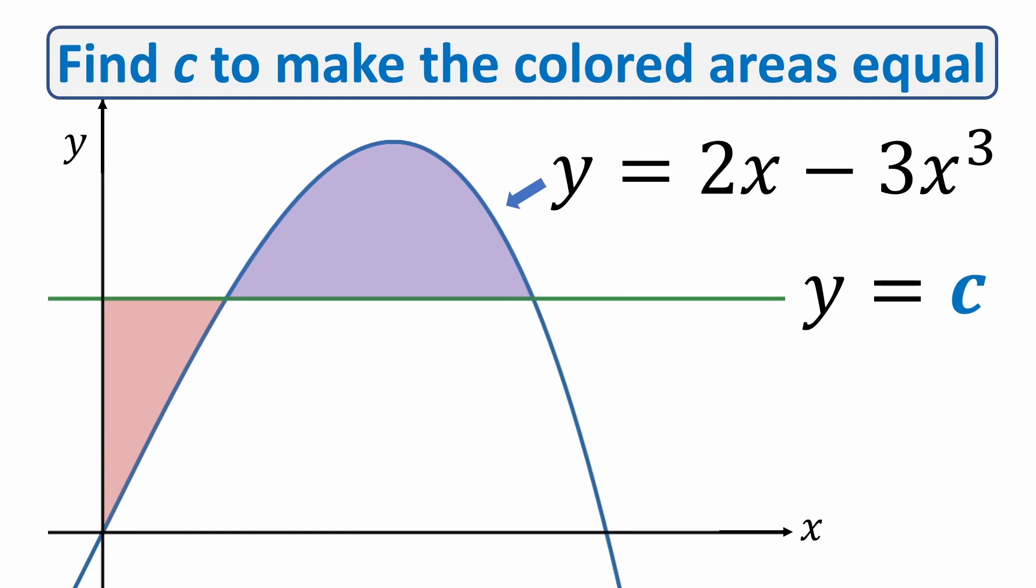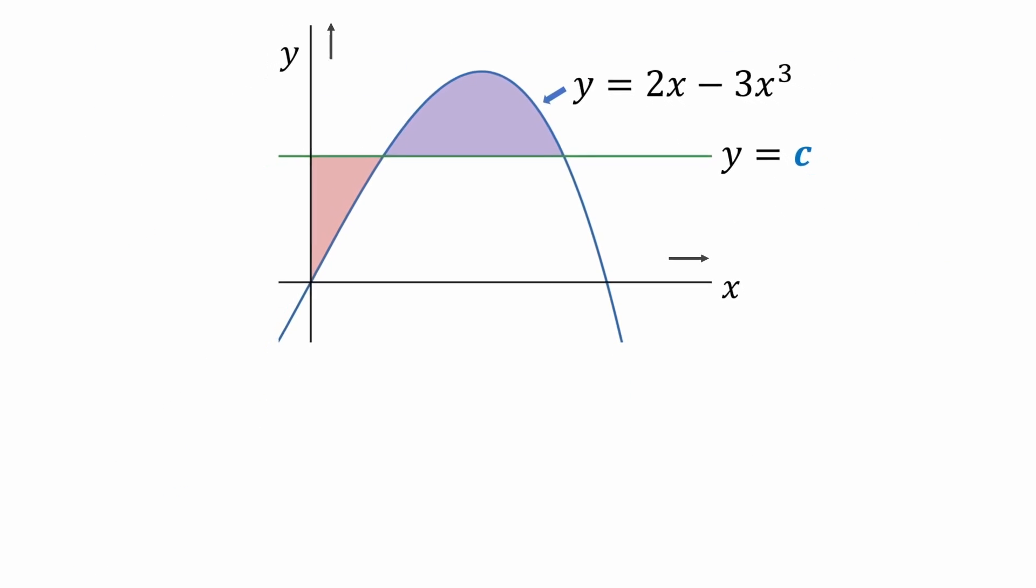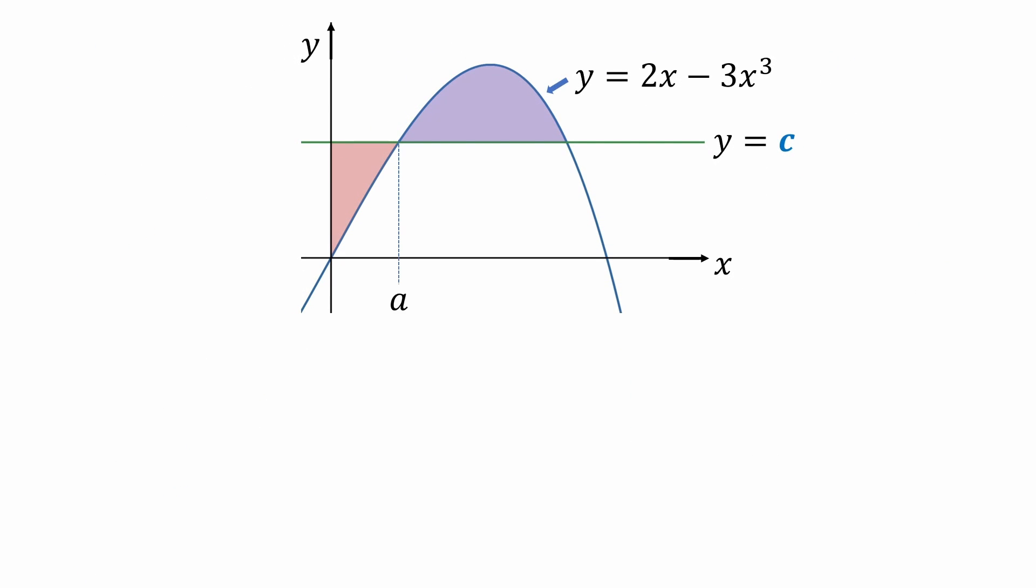Let's first establish some intervals so that we can set up some integrals. We'll define a as the x coordinate of the left intersection point and b as the x coordinate of the right intersection point.